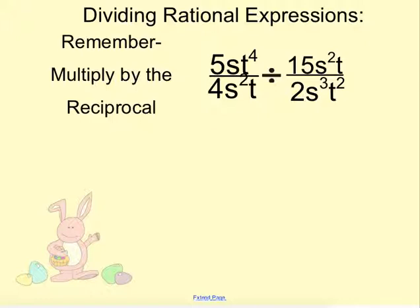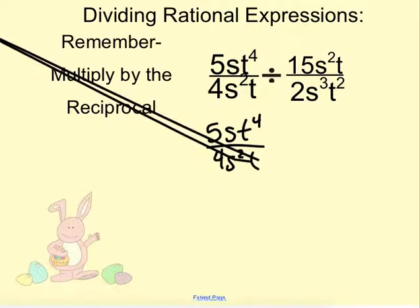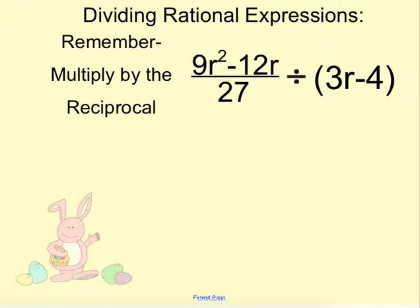Now, when we are dividing these rational expressions, not much changes other than the fact that we are going to take the first one, keep that the same. So 5st to the 4th over 4s squared t. But we are going to now multiply by the reciprocal of 2s to the 3rd t squared over 15s squared t. And we're going to multiply and simplify just like we normally would. That's the only thing that changes. But everything else stays the same.